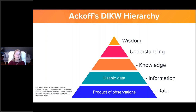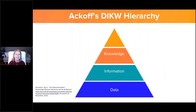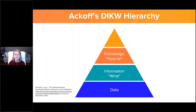Ackoff saw data as the product of observations, which he considered useless until processed into a usable form to become information. Knowledge would further refine information by transforming it into instructions. He considered understanding to be an ability to assess and correct errors, while wisdom was an ability to see long-term consequences. Understanding was eventually left out by those who adopted this model, and it became known as the DIKW — Data, Information, Knowledge, Wisdom — hierarchy.